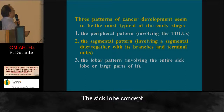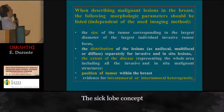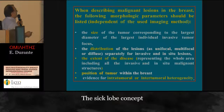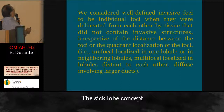The pattern of cancer development that seems most typical at the early stage includes: the peripheral pattern involving the terminal ductal lobular units; the segmental pattern involving a segmental duct together with its branches and terminal units; and the lobar pattern involving the entire sick lobe or larger parts of it. When describing malignant lesions in the breast, the following morphological parameters should be listed: the size of the tumor corresponding to the largest diameter; the distribution of the lesion as unifocal, multifocal, or diffuse — separately for invasive and in situ lesions; the extent of disease representing the whole area including all invasive and in situ malignant structures; position of the tumor within the breast; and evidence of intratumoral or intertumoral heterogeneity, more evident today with new research in biology.